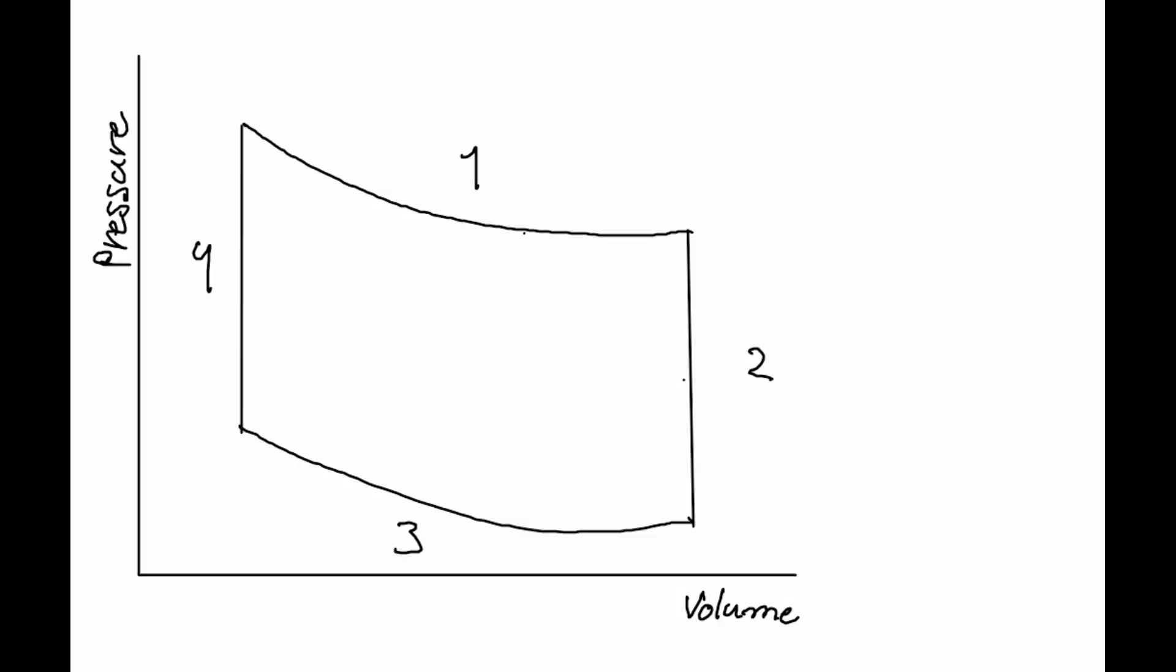To understand our heat engine we look at the so-called pressure volume diagram where pressure is graphed against volume. In this diagram four curves can be seen. The curves represent what would happen in theory.